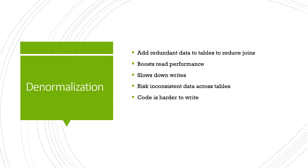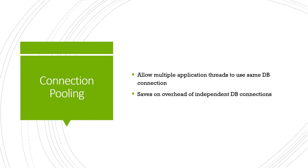Connection pooling is a fairly simple technique — a good metaphor is carpooling, where everyone rides in the same car to save resources. Instead of every application thread using its own individual connection to the database, connections are pooled together and shared, which saves on the overhead of many independent connections.